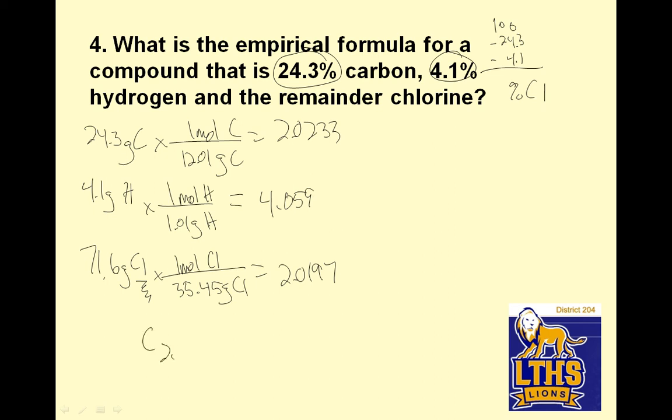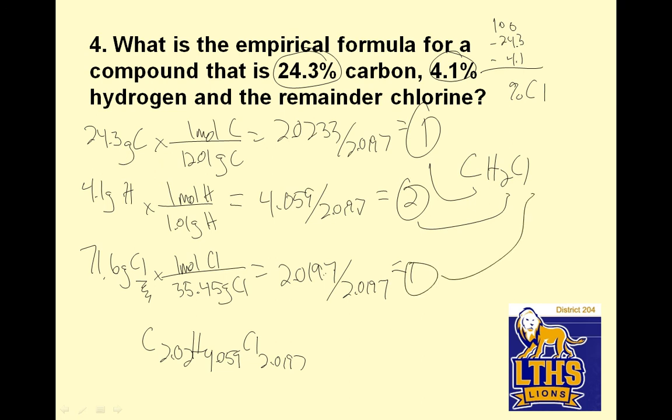So if I was an idiot, I would say it's C2.02H4.059Cl2.0197. But in reality, we want to make these whole numbers. So this one's pretty clear. It's going to be the smallest whole numbers possible. But we divide by the smallest one, 2.0197, and you get a more reduced number. 2.0233 divided by 2.0197, and I get 1.001. If you don't call that 1, your undies are wound up too tight. 4.059 divided by 2.0197, and you get 2.009. Even though it would be 2.01, that's 2. And of course, that's 1. So the formula is CH2Cl.